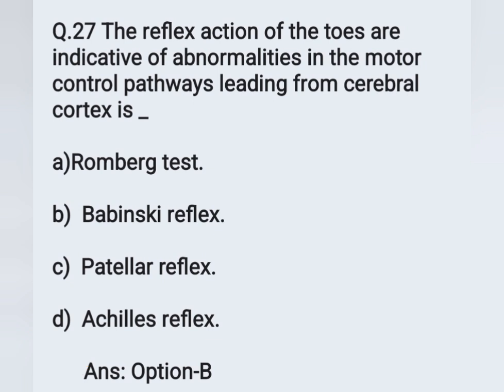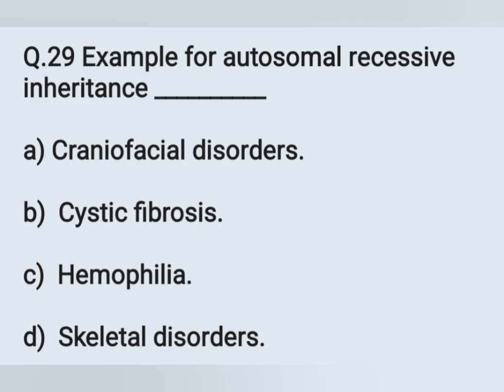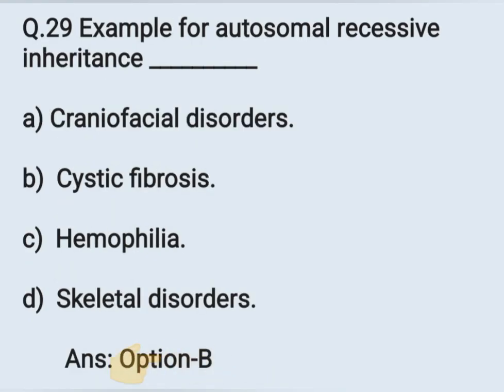Question number 29. Example of autosomal recessive inheritance — Option A: Craniofacial disorder. Option B: Cystic fibrosis. Option C: Hemophilia. Option D: Skeletal disorder. Autosomal recessive inheritance is cystic fibrosis. Option B is the correct answer.